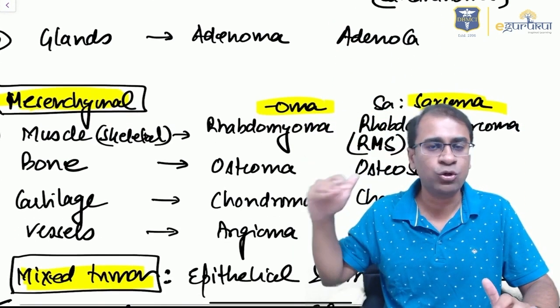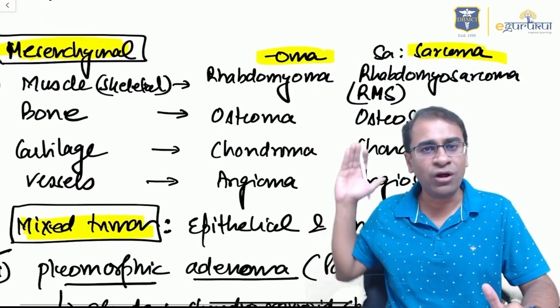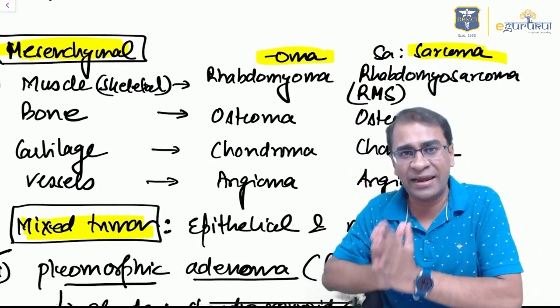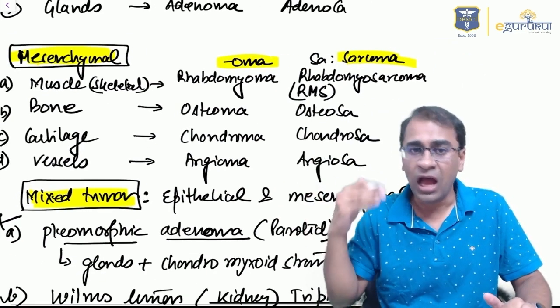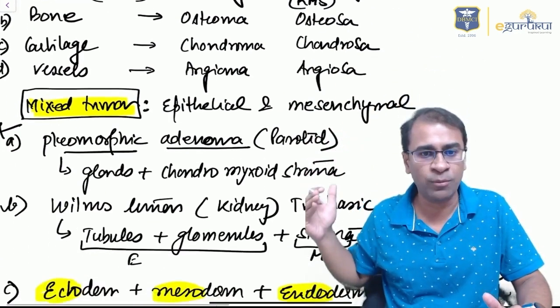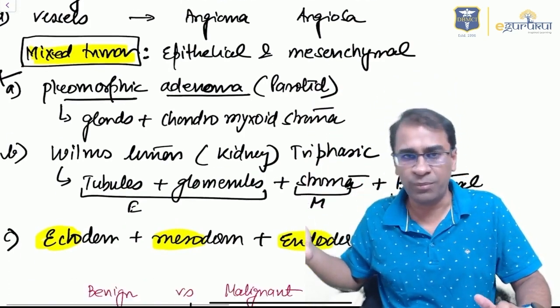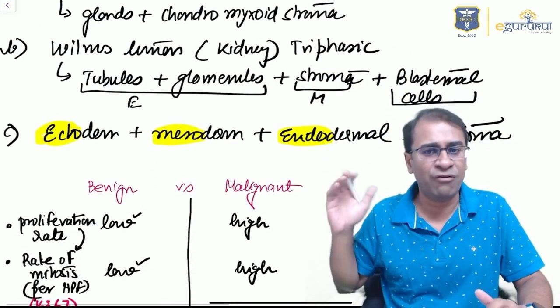For muscle, you put an -oma name, and for mesenchymal tumor you put the malignant term as sarcomas. Mixed tumors, for example parotid, will have pleomorphic adenoma. Warthin's tumor is also a mixed tumor, and teratoma is a very good example of a mixed tumor.